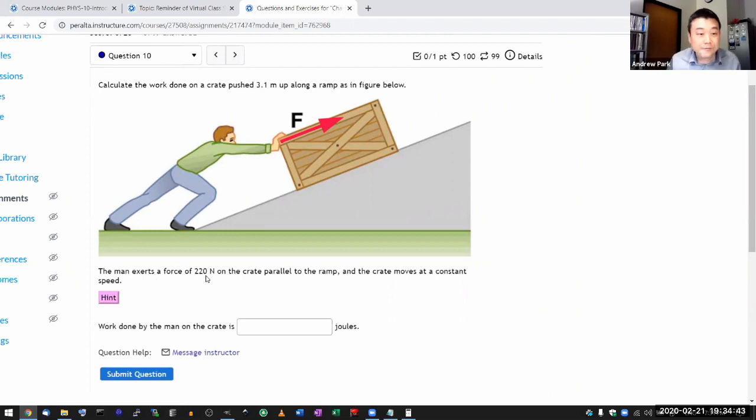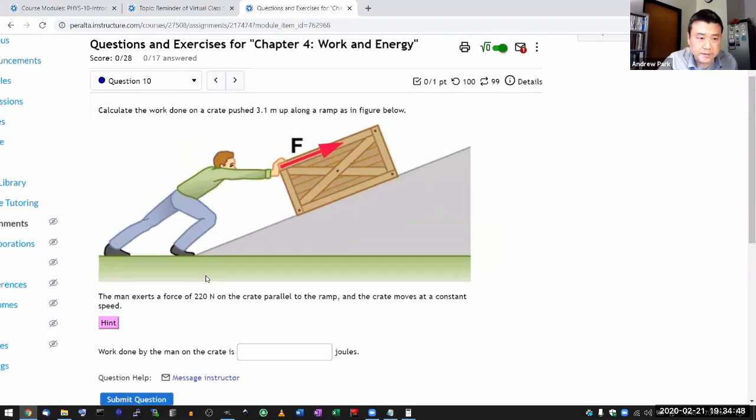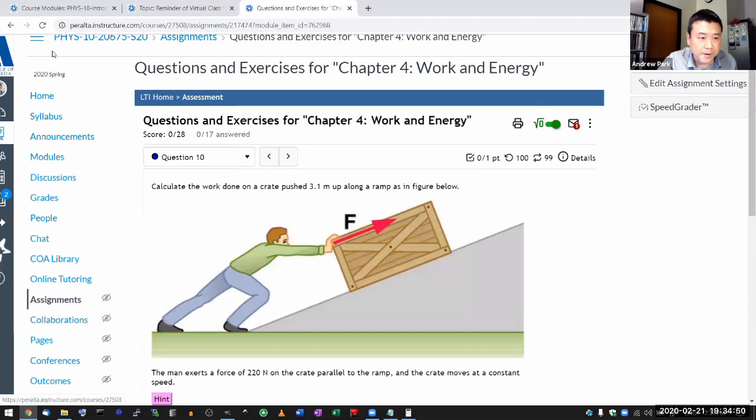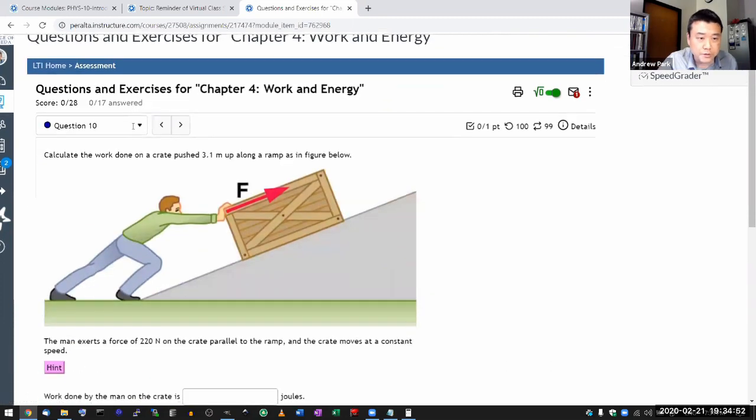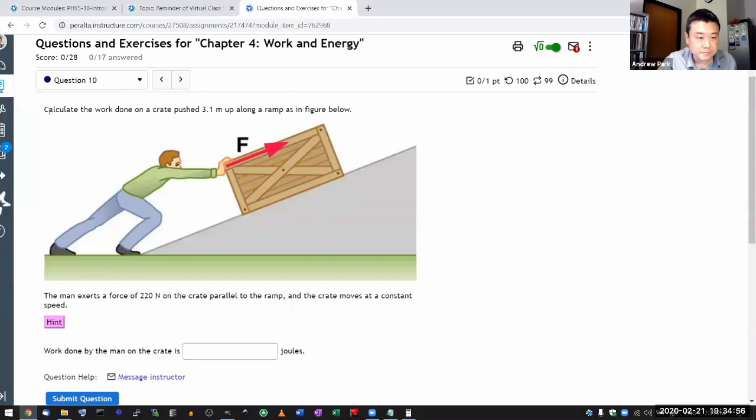So let me start out with question 10. This is I think a lot of people do get this kind of on the first try, but it's a good warm up question. So let me start out with this. It says, calculate the work done on a crate, pushed to some distance upon a ramp as shown in the figure below. Figure.